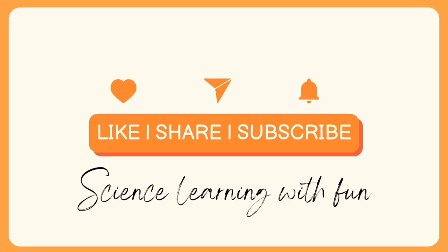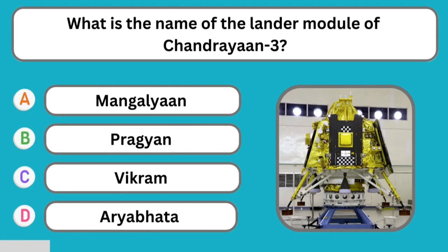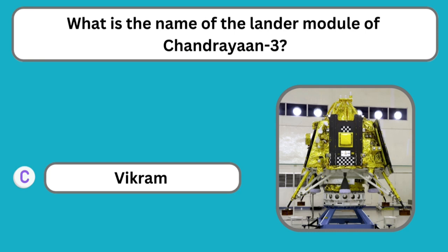Important MCQs related to Chandrayaan 3 for the VVM exam. Question number one: What is the name of the lander module of Chandrayaan 3? The correct answer is Vikram.